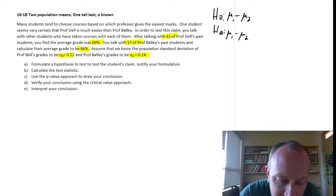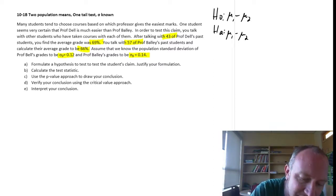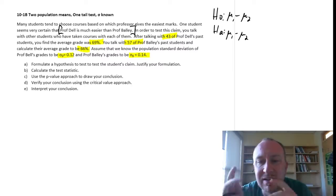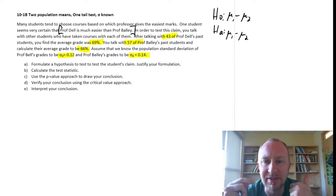Here I say one student seems certain that Professor Dell is easier than Professor Bailey. So to me that implies that the average grade in Professor Dell's class is higher than the average grade in Professor Bailey's.